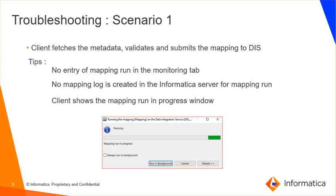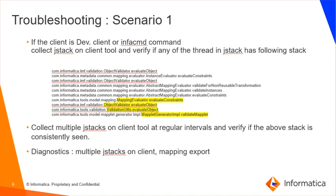The symptoms include: no entry of the mapping being run in the monitoring tab, no mapping log generated in the Informatica server log location, and the client shows the mapping run in progress. At this point, it is suggested to collect a Jstack on the client process. If the Jstack has a thread highlighted in yellow indicating validation of mapping is in progress, and this stack is seen consistently across multiple Jstacks captured during the run, it indicates mapping validation slowness. To further diagnose, send the Jstacks collected on the client along with the mapping export XML to Global Customer Support. If the stack is not seen but the mapping is still not submitted to DIS for execution, send the same diagnostics to GCS to identify the cause.